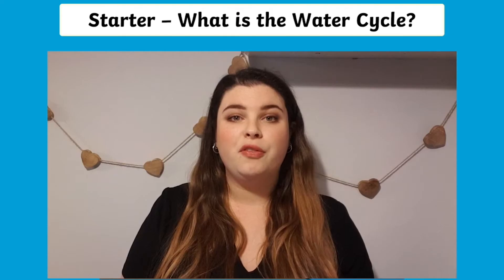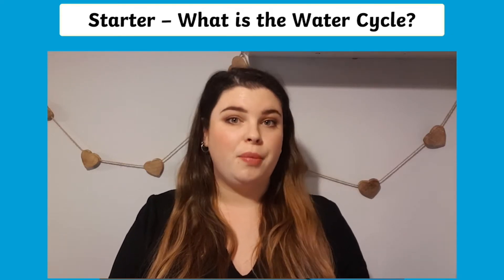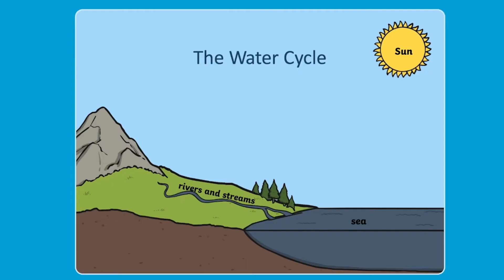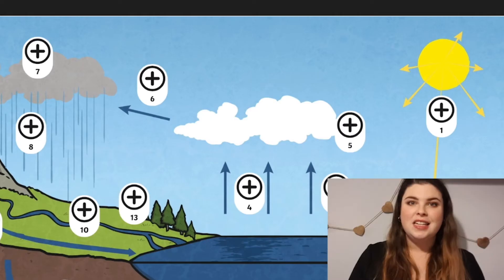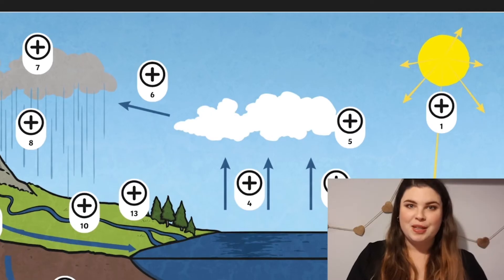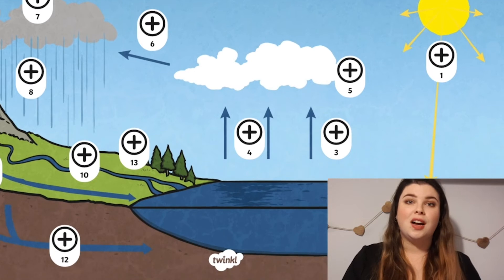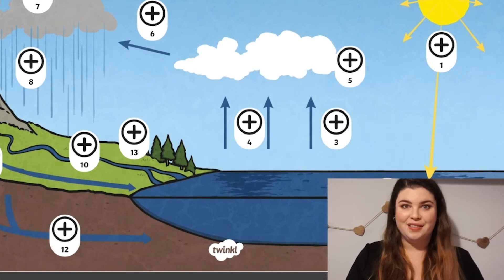Before we do the investigation we need to recap the water cycle. Some of the water evaporates, so our first stage is evaporation, and we call it a cycle because it goes on and on. Let's use the Twinkle Hotspots to look at the water cycle in more detail.